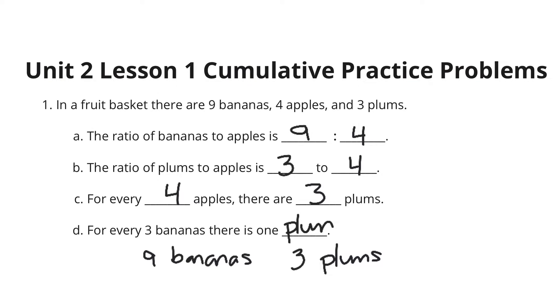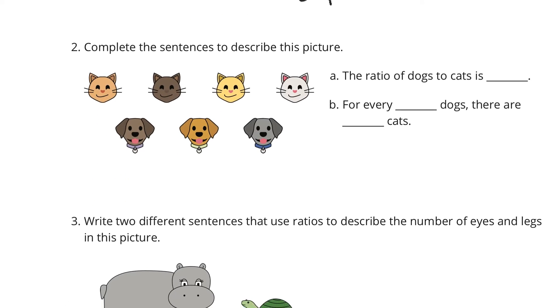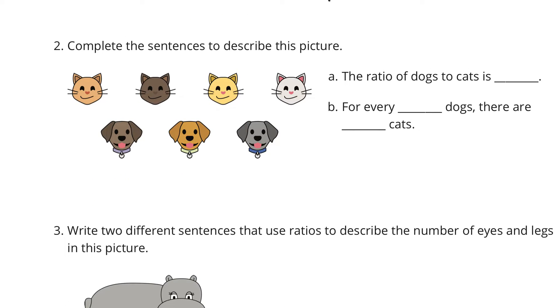Now, question 2. Complete the sentences to describe this picture. The ratio of dogs to cats is, well, we have 1, 2, 3 dogs, and 1, 2, 3, 4 cats. And so, this ratio is going to be 3 to 4. For every blank dogs, there are blank cats. Well, for every 3 dogs, there are 4 cats.